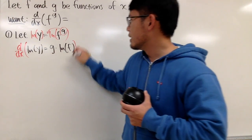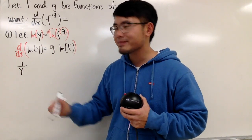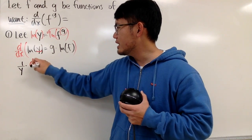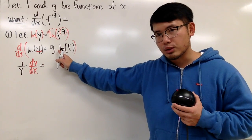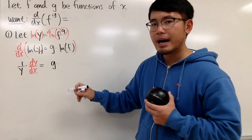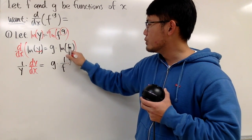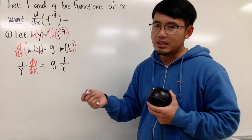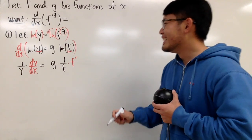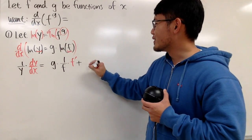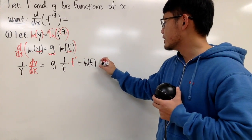Let's put down d/dx. On the left-hand side, the derivative of ln(y) is 1 over y, and we multiply by the derivative of the inside because of the chain rule, giving us dy/dx. On the right-hand side we have a product, so we use the product rule. Keep the first function g and multiply by the derivative of the second: the derivative of ln(f) is 1 over f, and by the chain rule we multiply by f prime. Then we add the second function ln(f) multiplied by the derivative of the first, which is g prime.